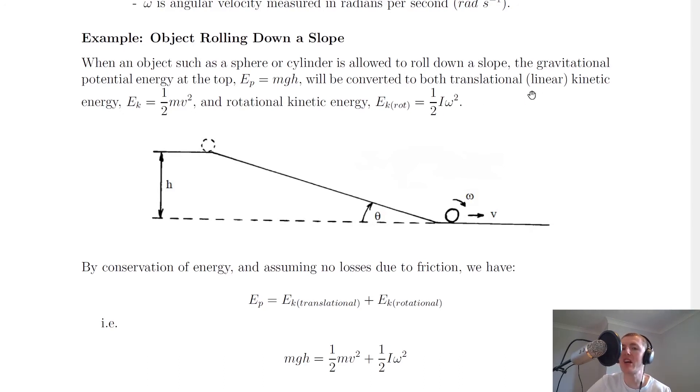Now this is probably a new word for you, translational, but it basically just means linear. It means motion in a straight line. So if we think about this sphere or cylinder rolling down the slope here...